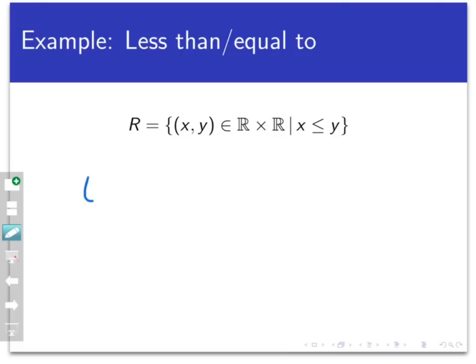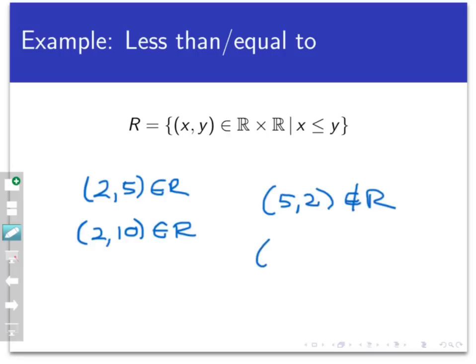So, for example, (2, 5) is in the set R, and so is (2, 10). And that automatically tells you that this relation is not a function, because 2 is related to two different things. Now, on the other hand, (5, 2) would not be in this relation, because of course, 5 is not less than or equal to 2. However, (5, 5) would be in that relation because 5 is less than or equal to 5.